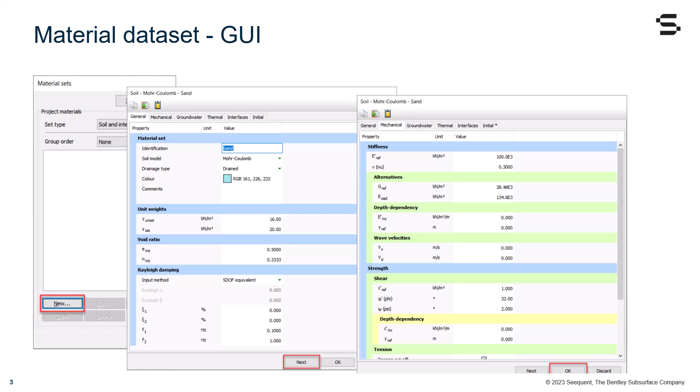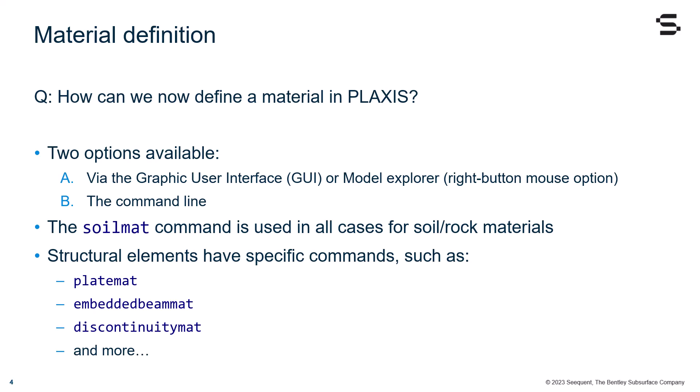At the end, you press OK, and the material is ready to be used in your project. So, how can we now define a material in PLAXIS?